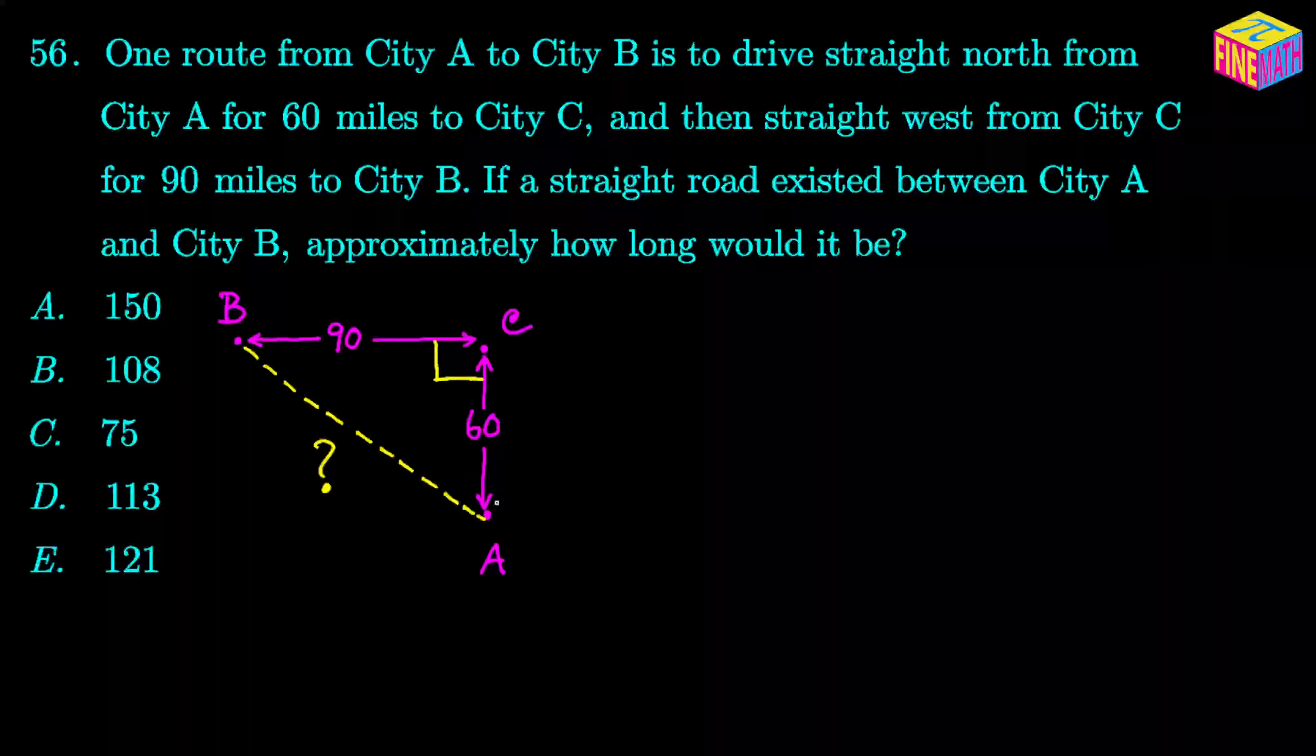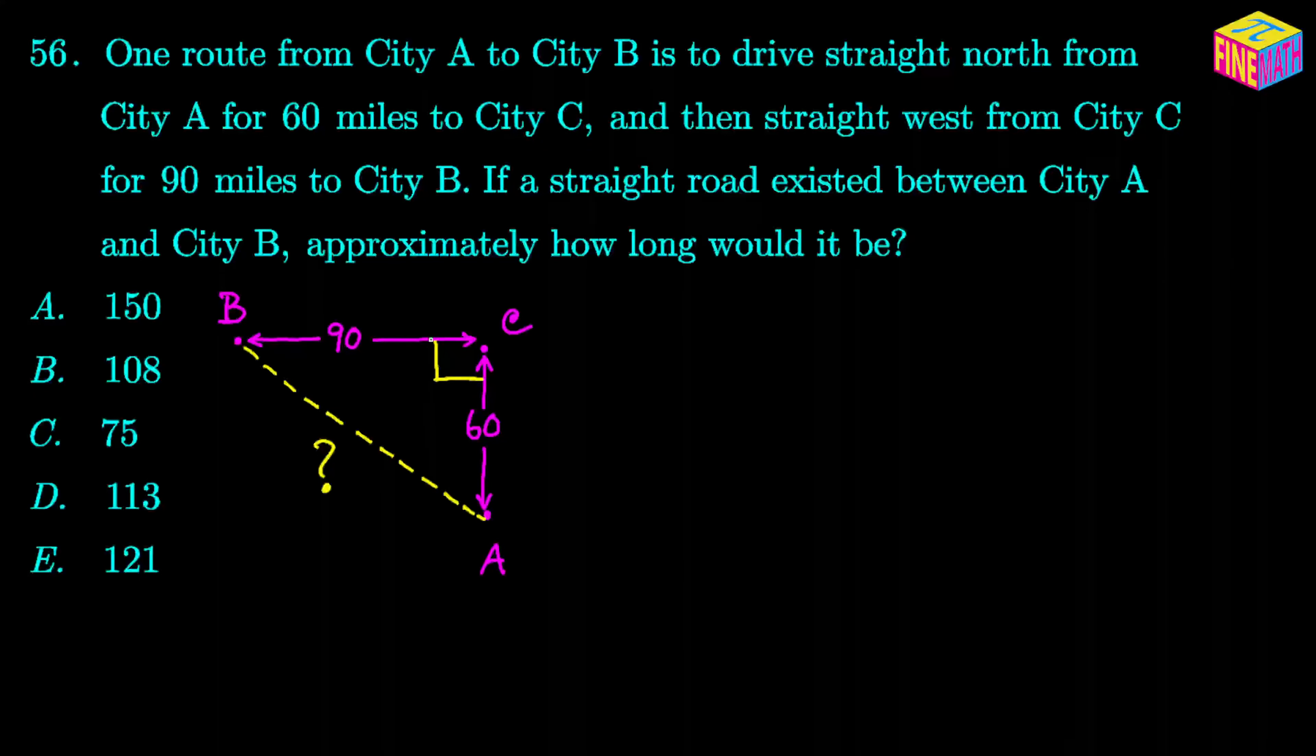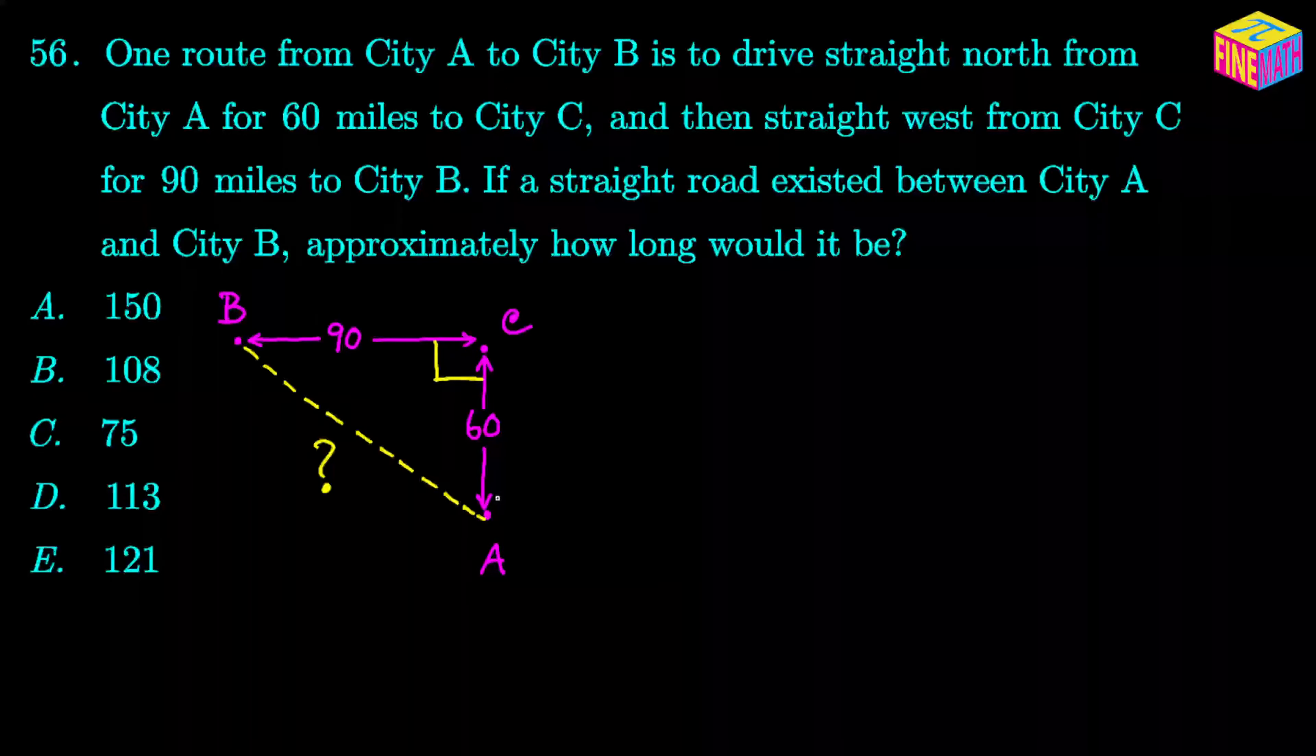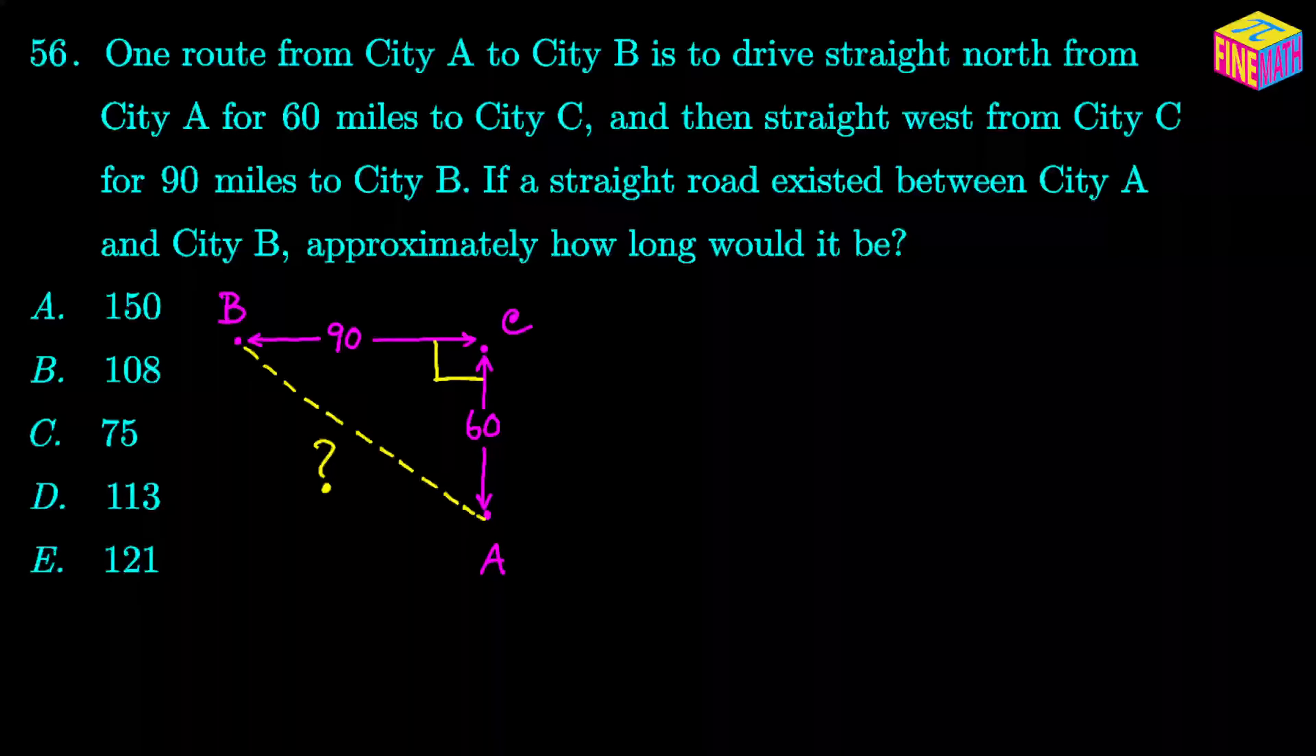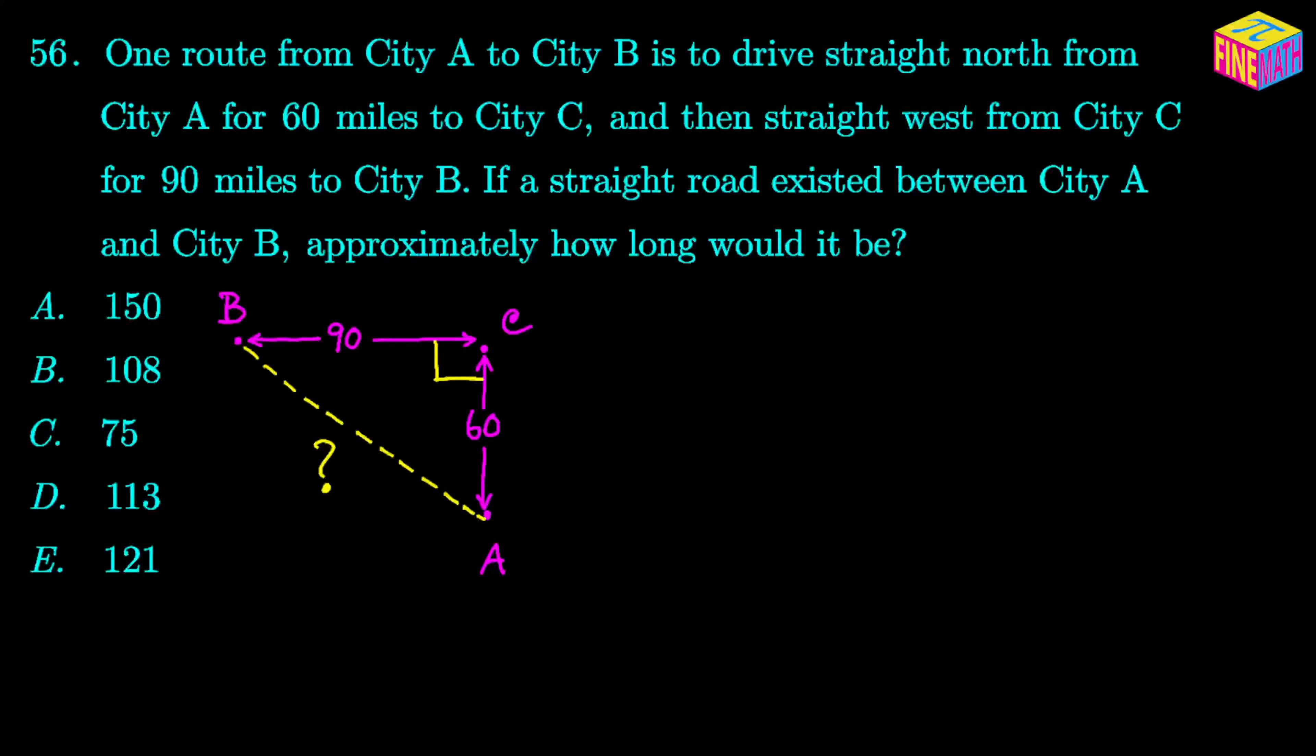So if you think about the triangle A, C, B, that triangle is actually a right triangle and the right angle is the angle ACB. So then the sides AC and CB are the two sides, and AB is the hypotenuse and we have to find out the length of the hypotenuse.